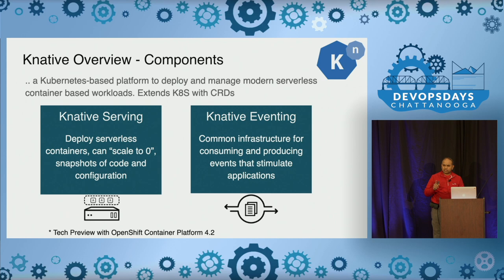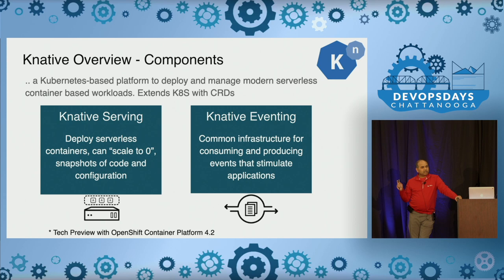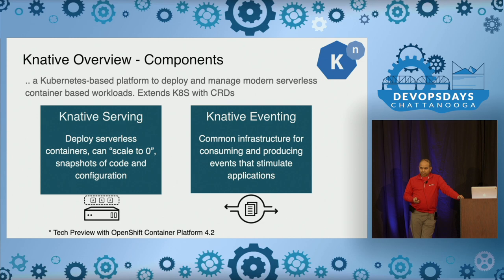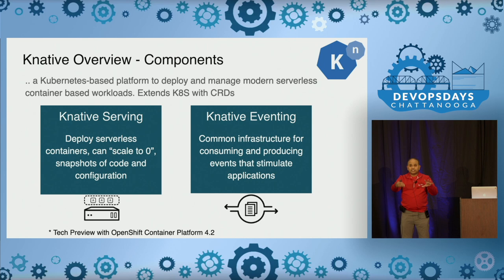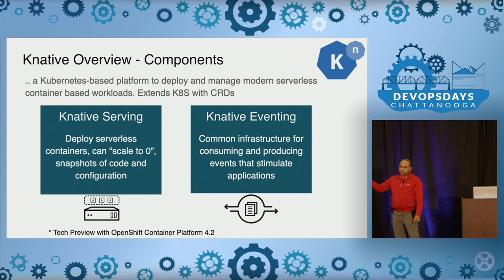We are talking about some new technologies on top of Kubernetes — these were announced just about a year ago. The technology is Knative. This is an open source project, and under this project there are two branches. One is called Knative Serving, which provides the serverless paradigm for containerized applications running on top of Kubernetes. It scales the application down to zero when you are not using it. All the infrastructure needed to do that is implemented as part of Knative Serving.